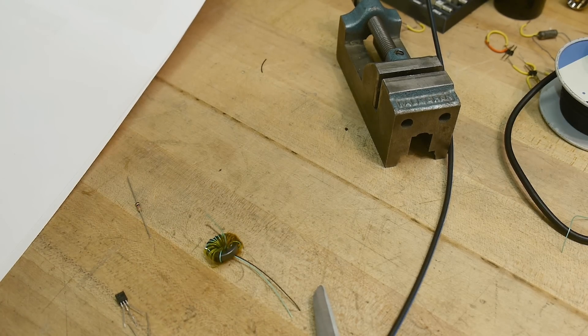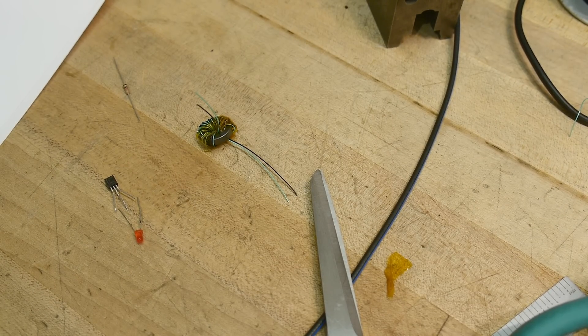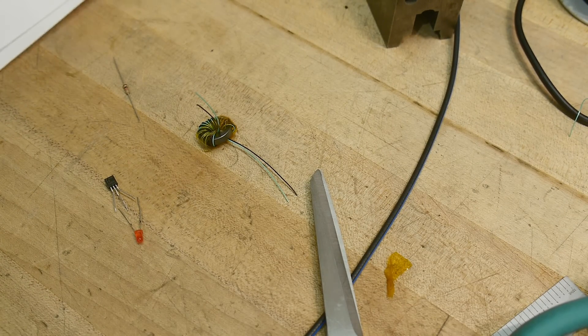And we need an LED. I guess this will be a good LED. And this will be collector, base, emitter. And the LED will go across the collector and the emitter. Let's turn on the soldering iron and get things hooked up here.